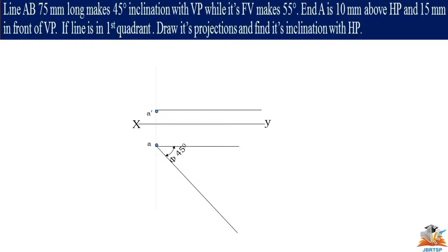They gave the line AB of 75 mm. Its length is 75 mm makes 45 degree inclination with the vertical plane. Now the true length is 75 mm. From point A mark the length of 75 mm and angle of 45 degree and draw the line like this and the end point is B1. This is true length.